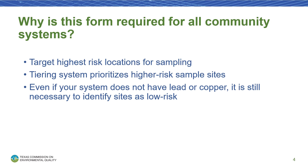The Lead & Copper rule requires that systems sample at locations that are more susceptible to high lead or copper concentrations. A tiering system was created to prioritize the use of higher-risk sample sites. TCEQ uses Form 20467 to identify which tiers your sites fall into. All sites where lead and copper tap samples are collected must be selected from a pool of targeted sampling sites identified through the material survey and approved by TCEQ prior to sampling. Even if your system does not have any lead or copper pipes in the distribution system, you're still required to fill out the form so that the sites can be identified as low-risk. Pages 3 and 4 of the form provide additional guidance regarding this monitoring requirement and the guidelines for prioritizing higher-risk sites.